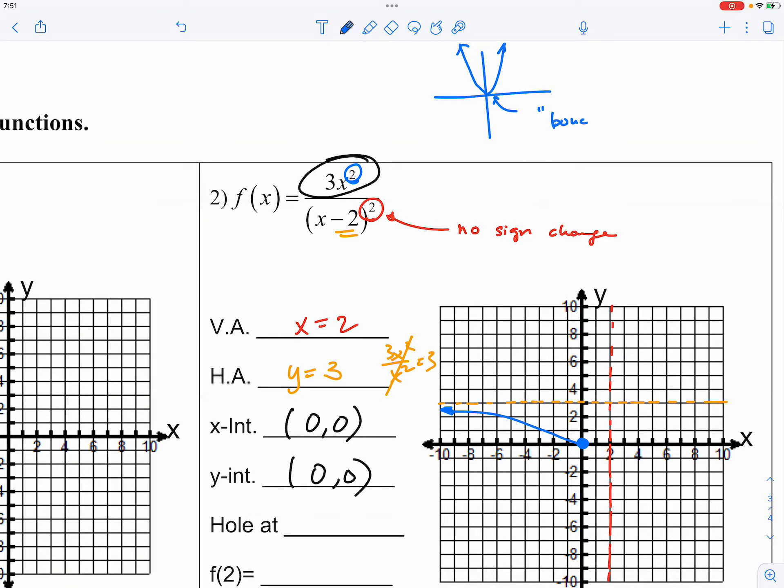Now, the reason why we say it's a bounce is just another way of saying that it's no sign change. Right? There's no sign change. Therefore, it bounces. And for us, it would be exactly the same thing, because there is no sign change, it's going to bounce. Okay? There's no sign change because it's x squared. And then on the other side, then we have something like this.